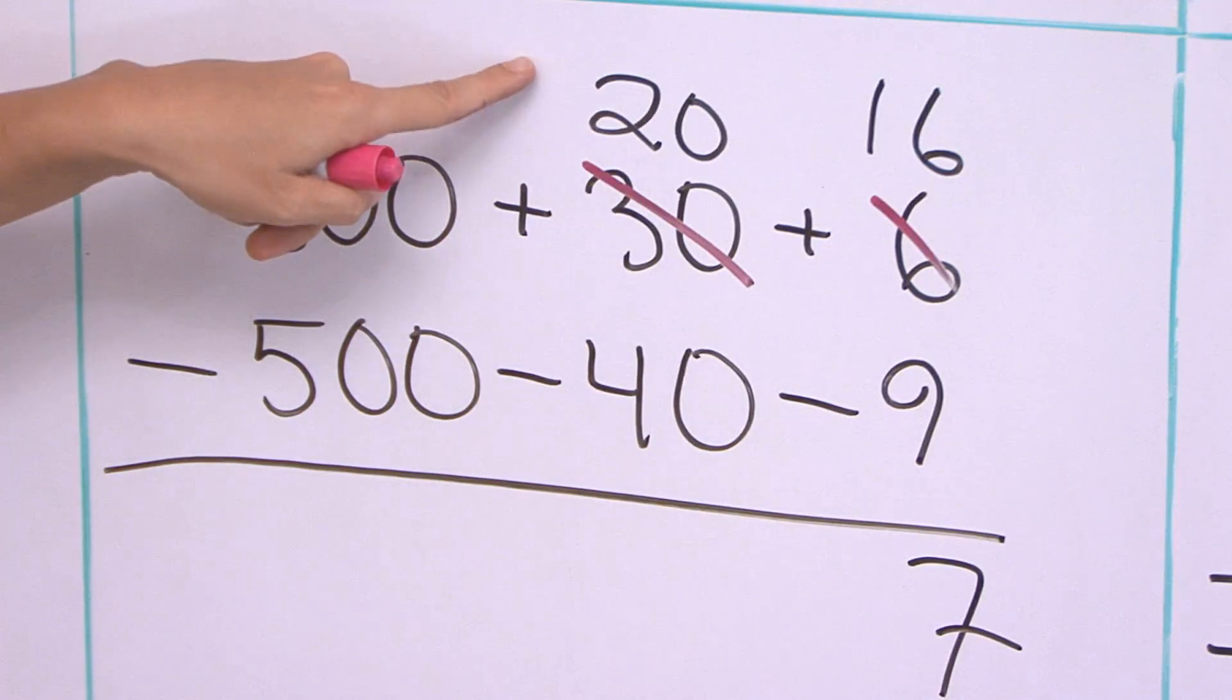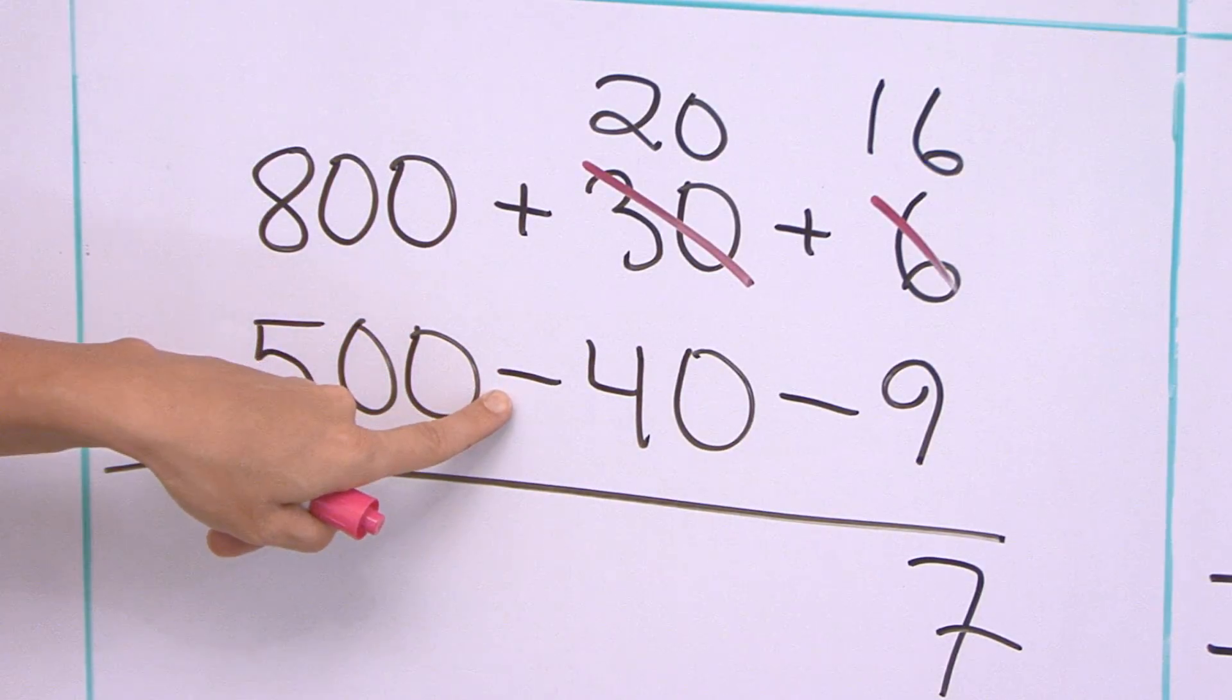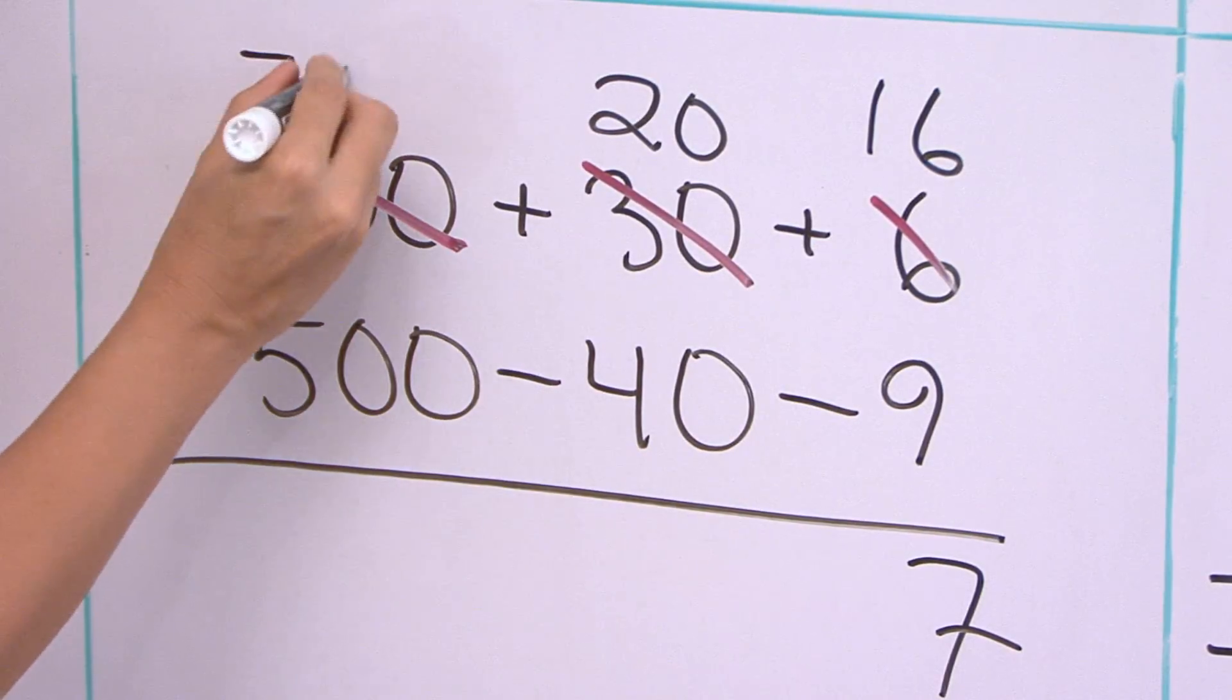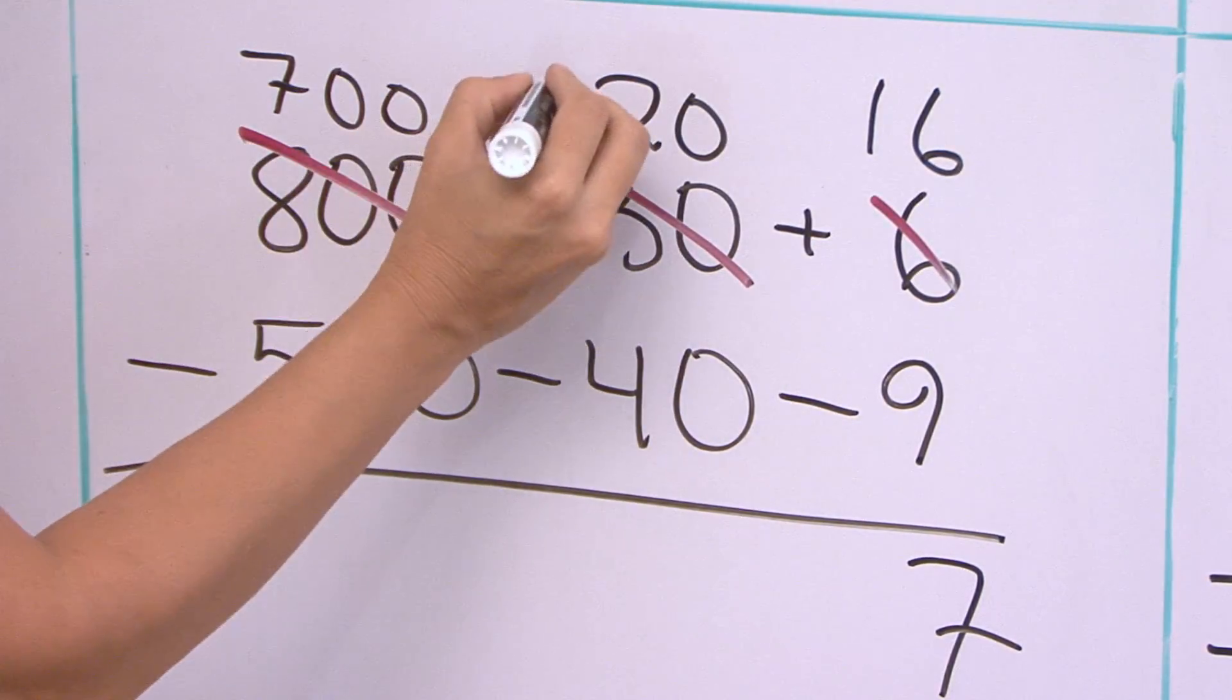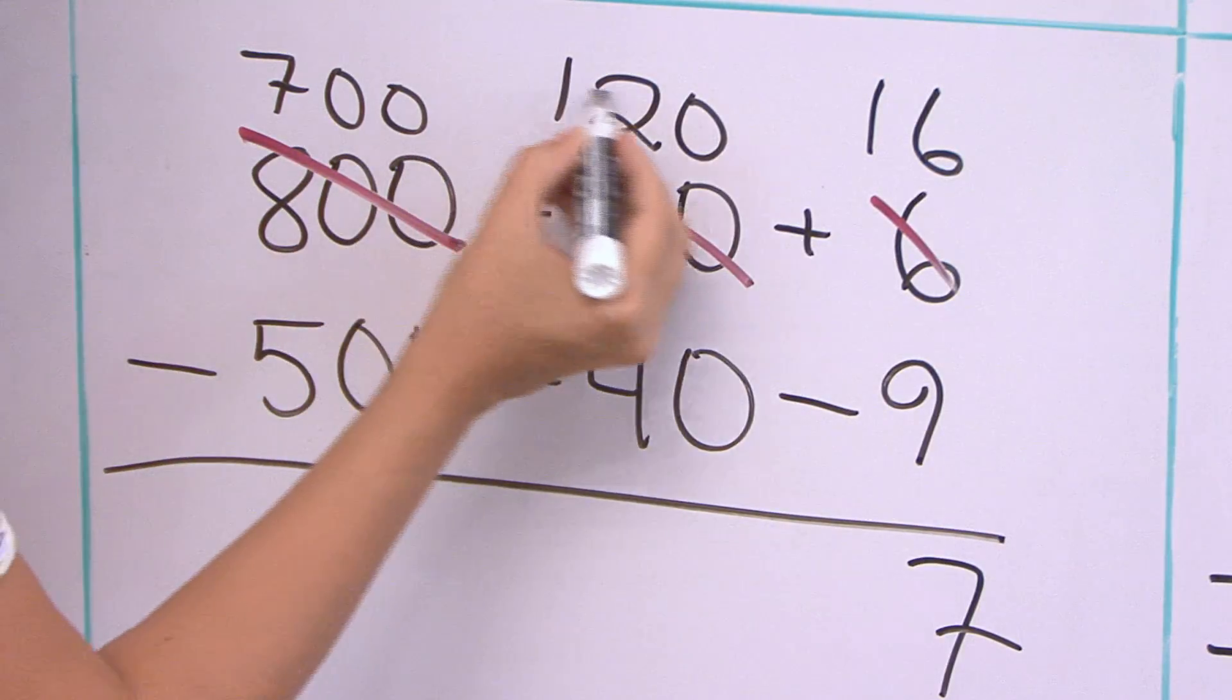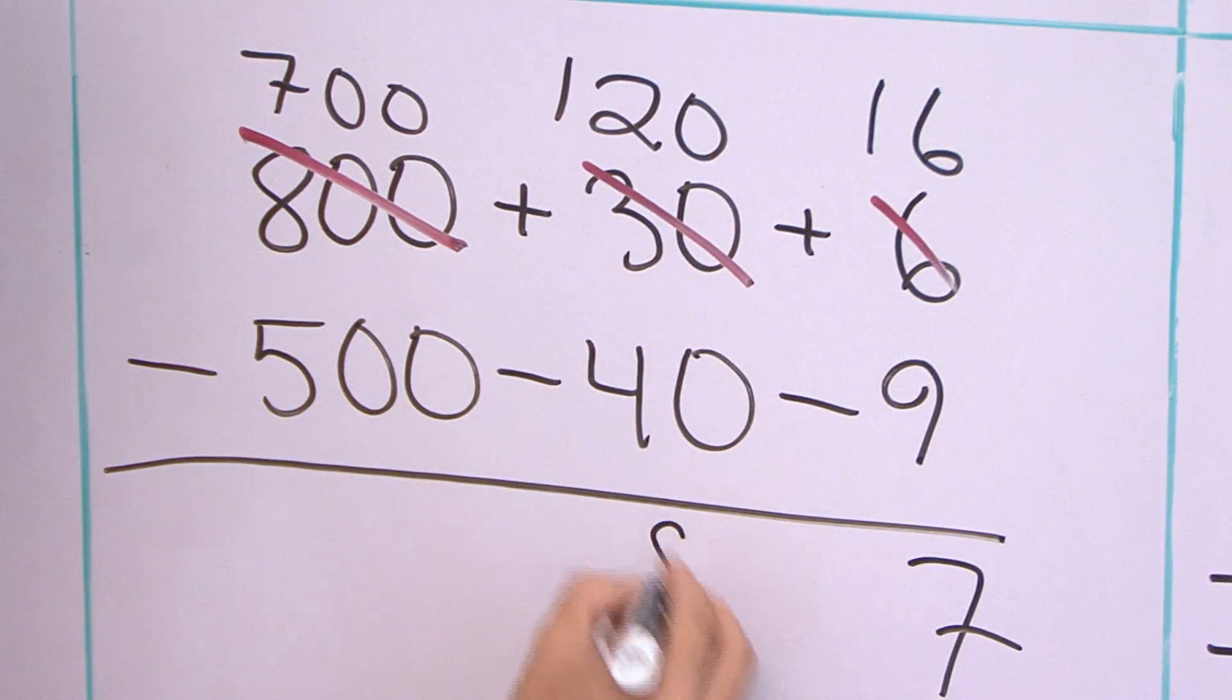In the tens, twenty minus forty. I cannot do that. So, the same thing. Take one of the hundreds now, leaving seven hundred here. And the one hundred moves here, so I have one hundred and twenty now. One hundred and twenty minus forty, that's eighty.